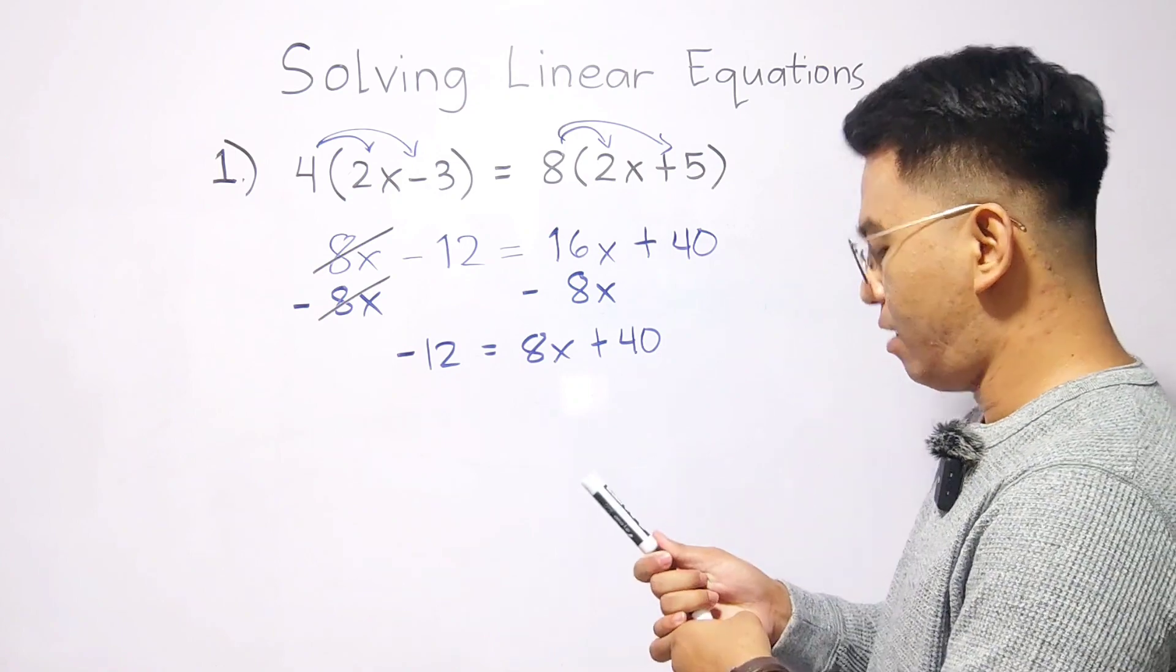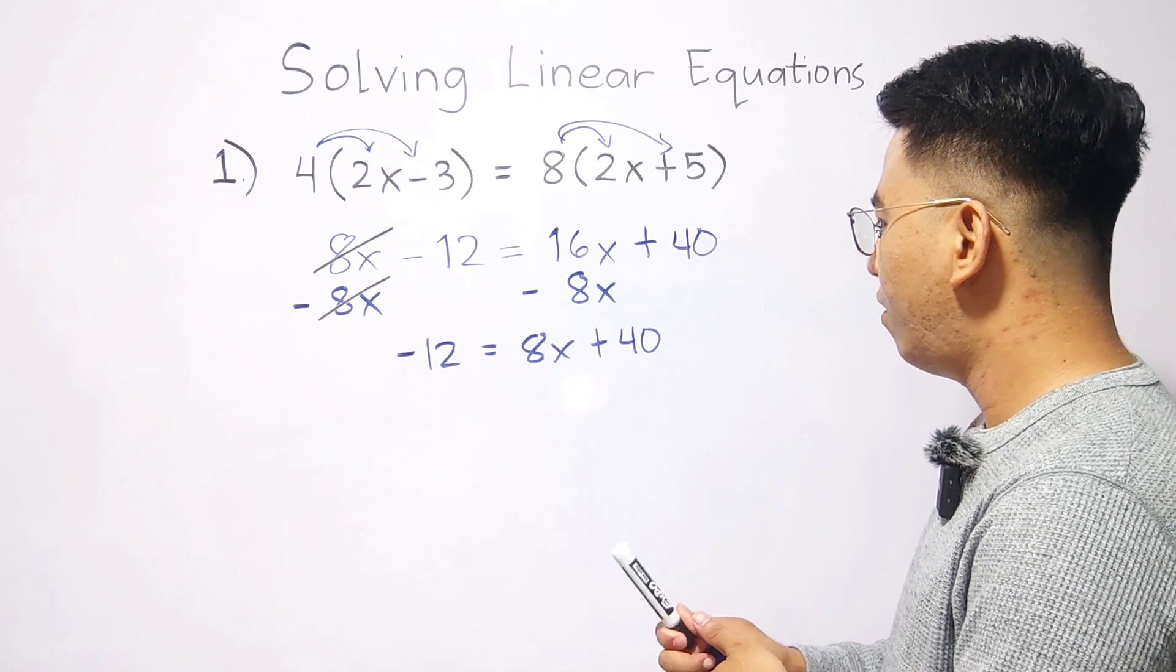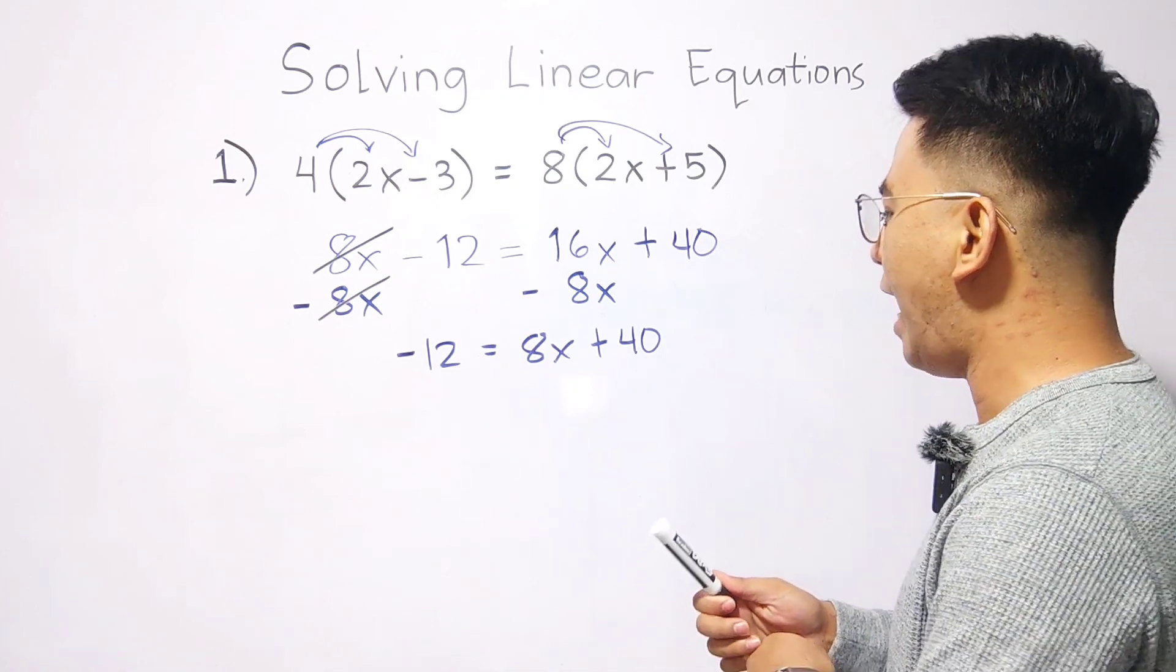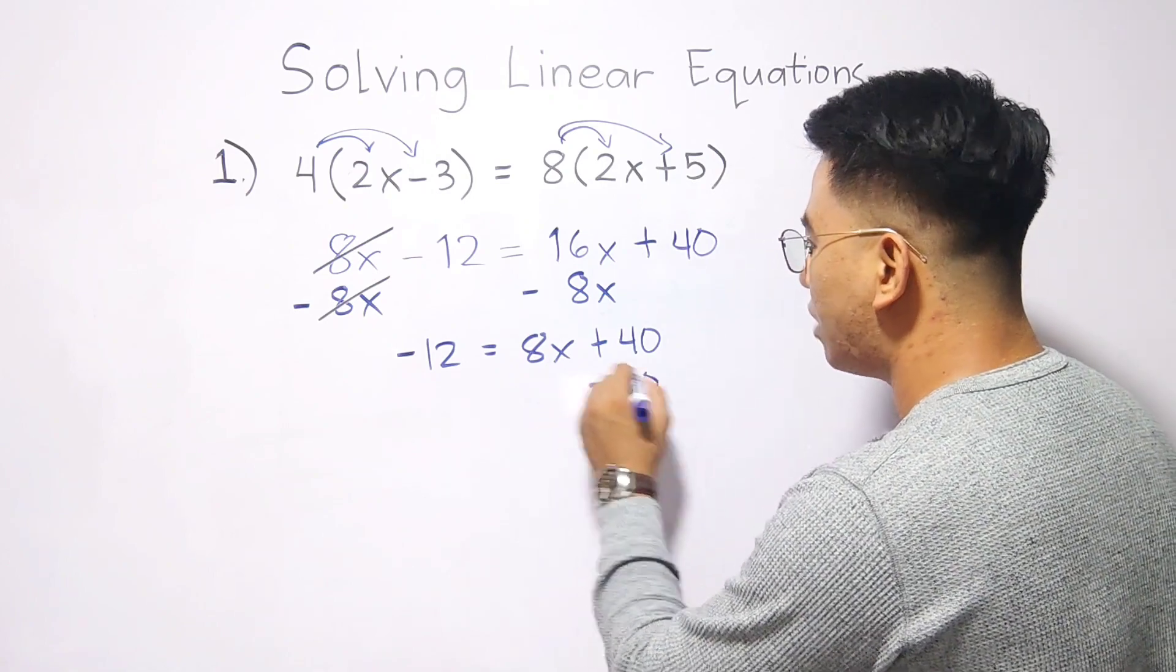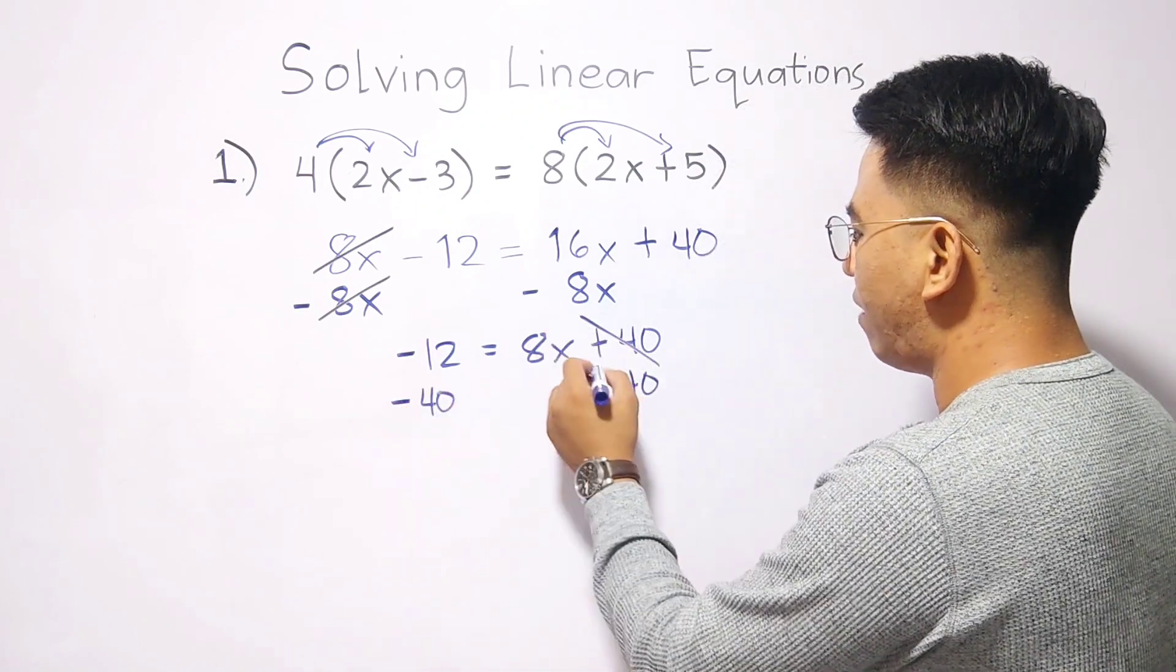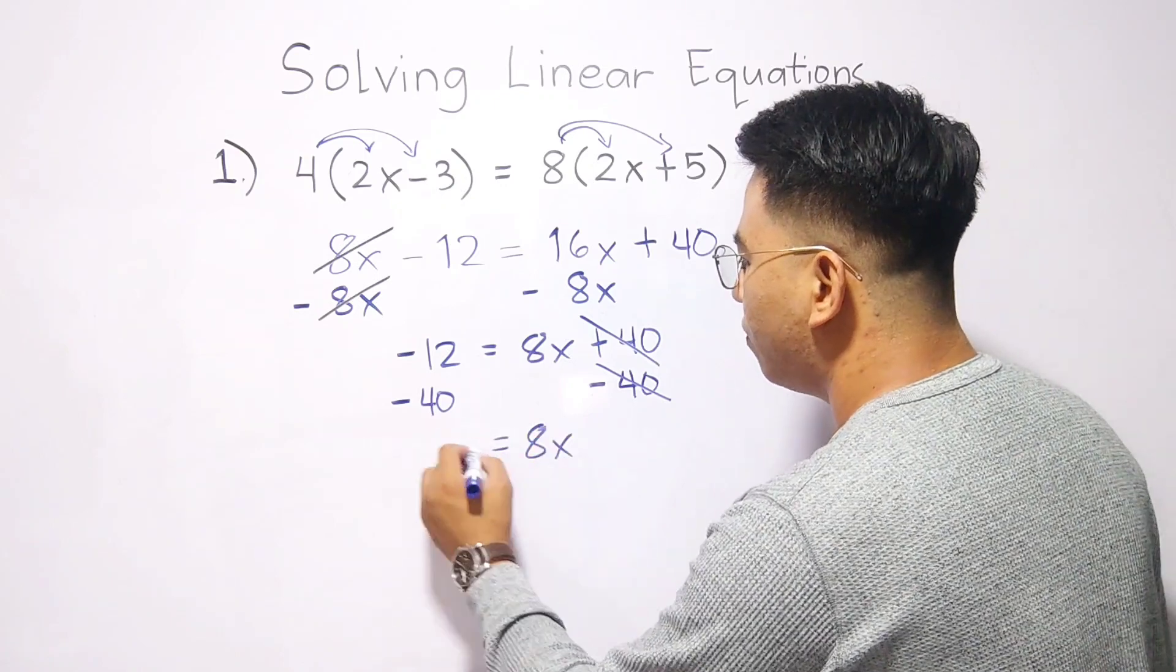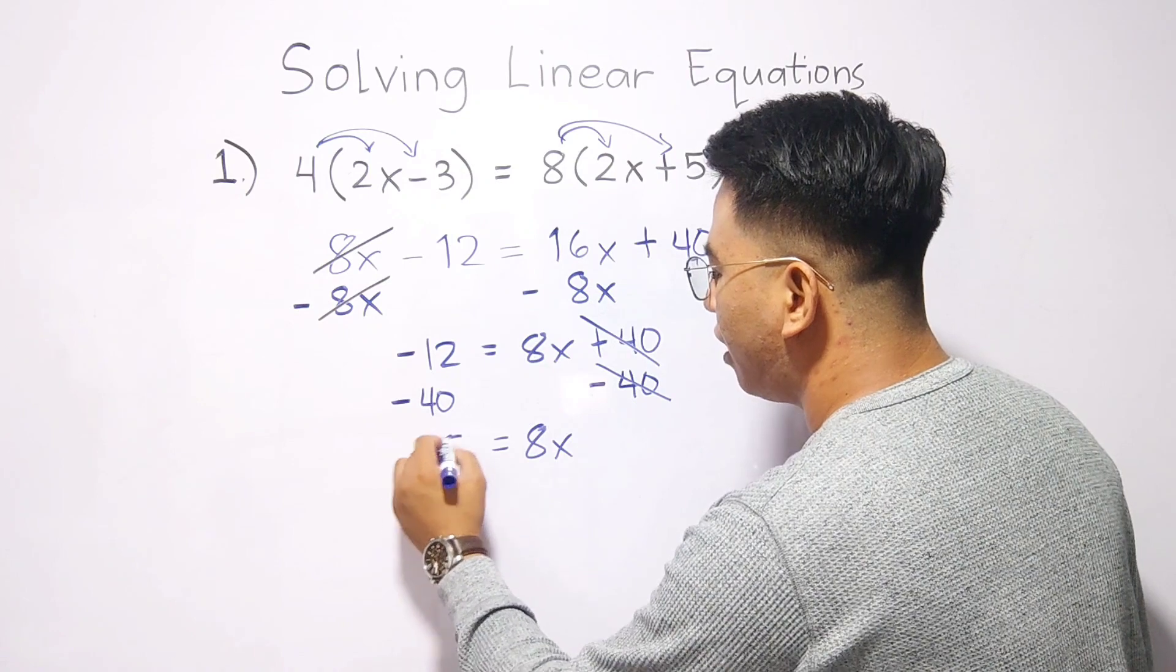So, what's next? We will remove 40 on the right side of the equation. We will subtract this by 40, as well as the other side of the equation. So, this one will be cancelled out. And what we have here is 8x is equal to negative 52.